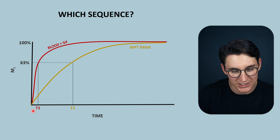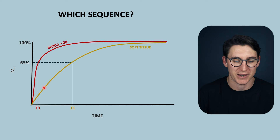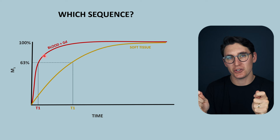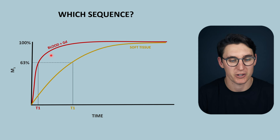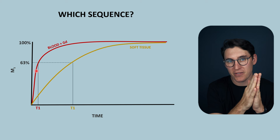To show differences in these T1 times, we need a short TR time. A short TR is going to prevent soft tissue from regaining much longitudinal magnetization, whilst blood with gadolinium is going to have a lot of longitudinal magnetization. The degree of longitudinal magnetization will determine how much transverse magnetization we get at the next RF pulse. Gadolinium also reduces the T2 time, so we want to have a short TE to prevent losing that signal after we've flipped the net magnetization vector into the transverse plane.